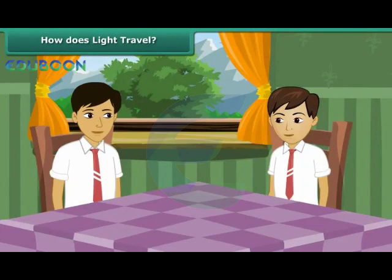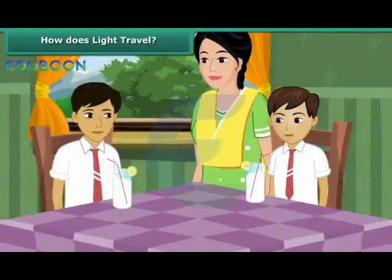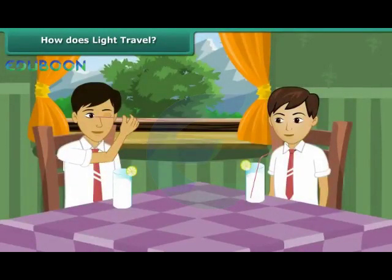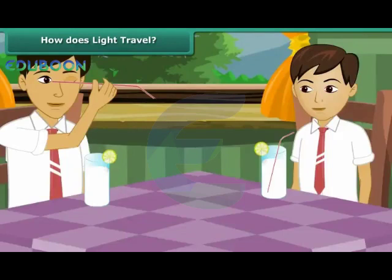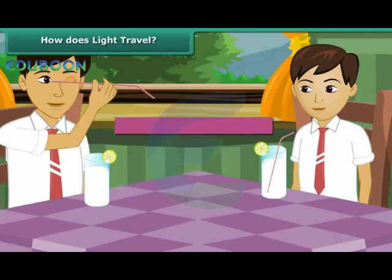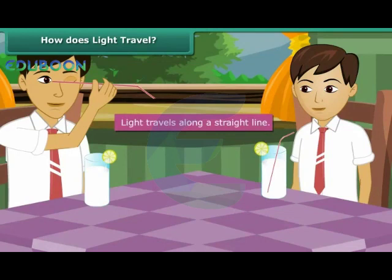You and your brother Ashish have just returned from school. Your mother gives both of you lemonade to drink. Your mischievous brother picks a straw out from the glass and tries to look at you through it. After a while, the thin straw bends. Now when Ashish tries to look at you through it, he is unsuccessful. This proves that light travels along a straight line.